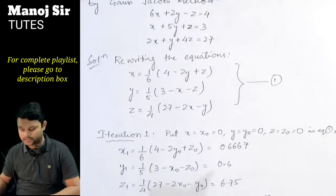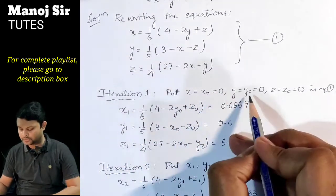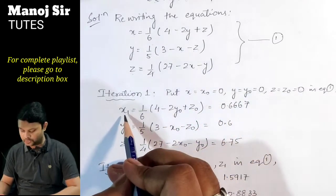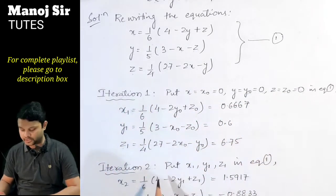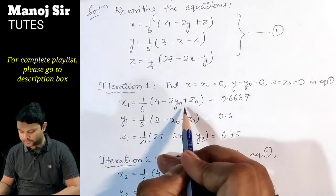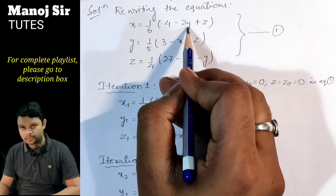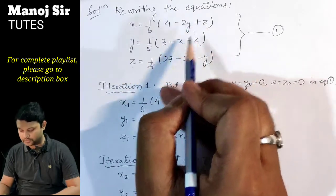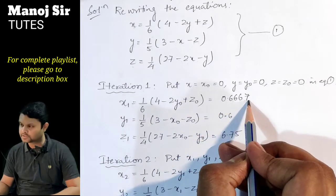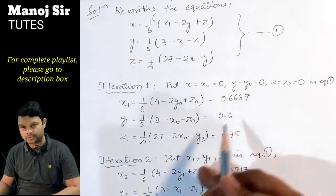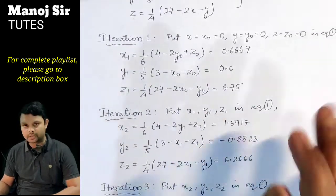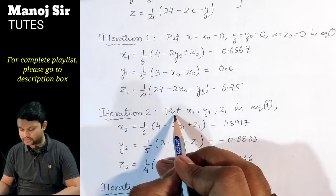Since initial approximation values are not given, we take x0 = 0, y0 = 0, z0 = 0. Performing the first iteration to find x1, y1, z1 by substituting subscript 0 values: x1 = 0.6667, y1 = 0.6, z1 = 6.75.